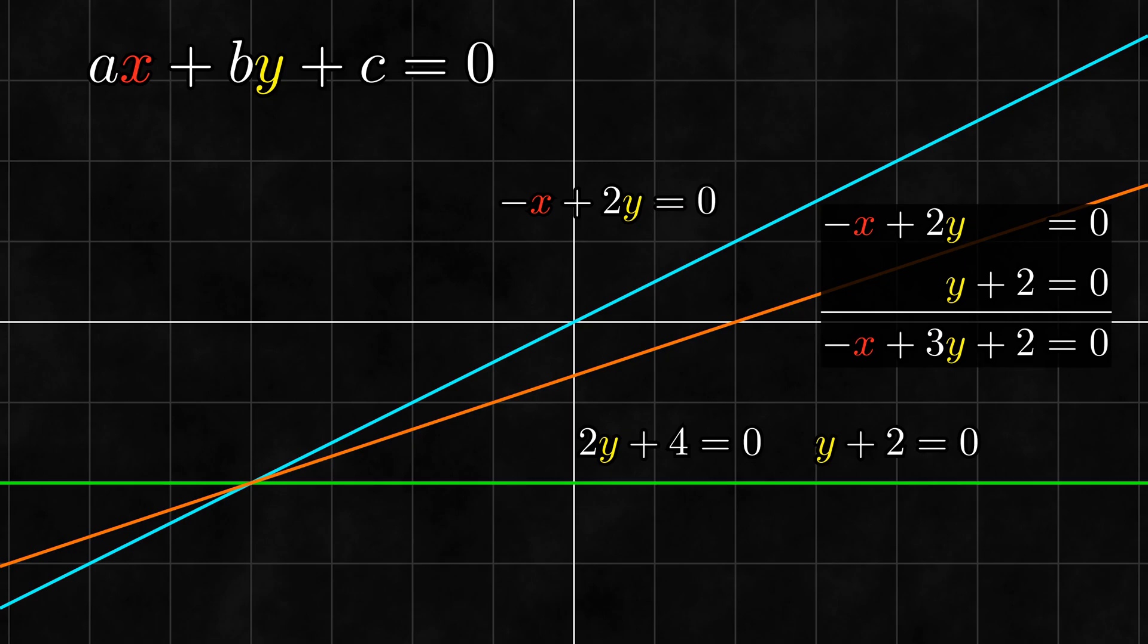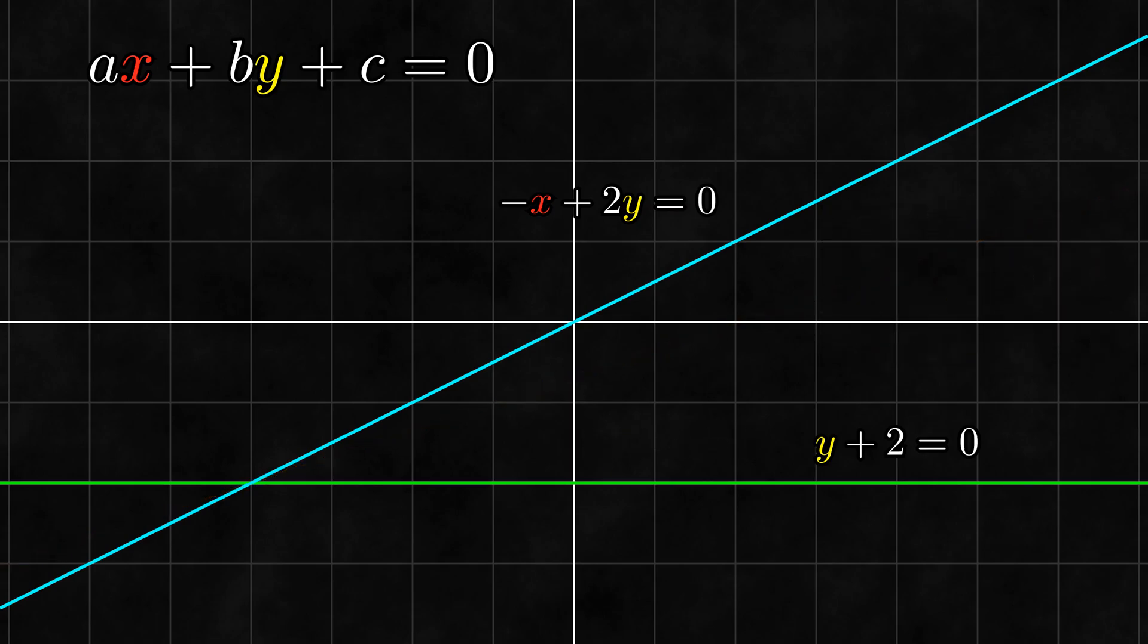Now the first thing that I want to talk about is the way we write our vectors. Notice that this formula for the equation of a line looks like a linear combination. We can make this explicit by saying that we have three vectors e1, e2, and e0, and linear combinations of these three vectors correspond to lines in two-dimensional space. As suggested by this notation, the vectors e1, e2, and e0 are a basis for the linear space of two-dimensional lines.